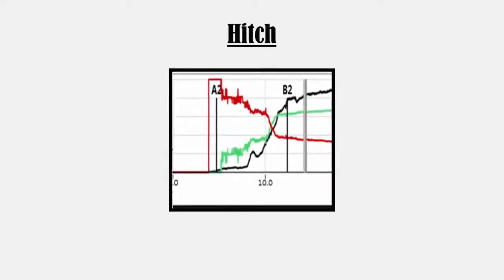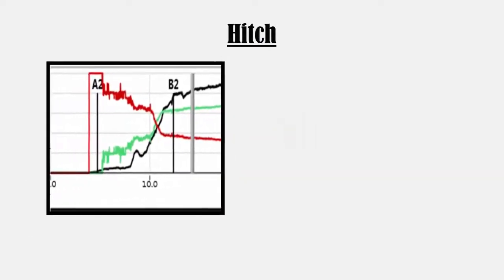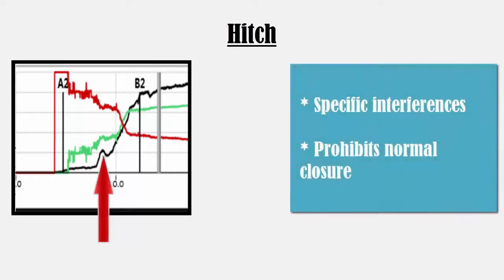The second example demonstrates a hitch. This occurs when the forces rise and then quickly fold before rising further. This can indicate your patient has a specific interference that prohibits normal closure.